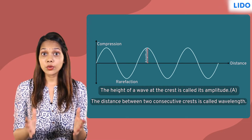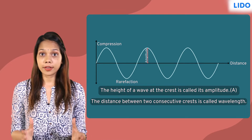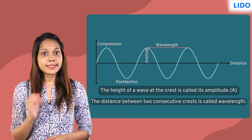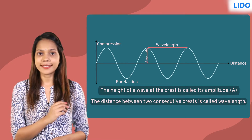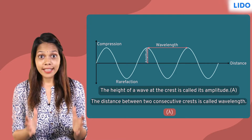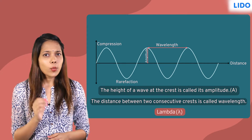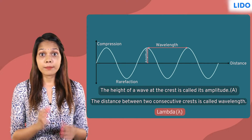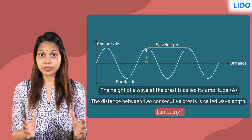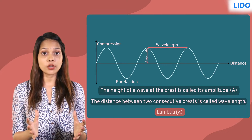The distance between two consecutive crests is called wavelength. It is denoted by this symbol and is called lambda. In one wavelength, the wave travels through one complete vibration.